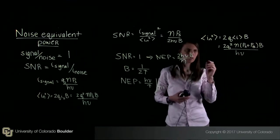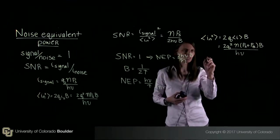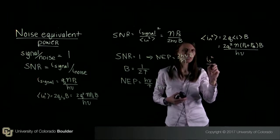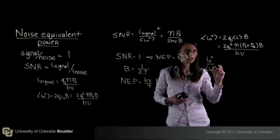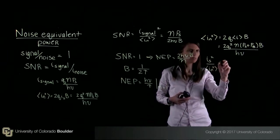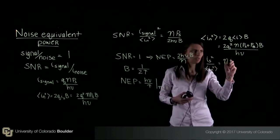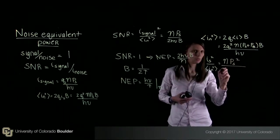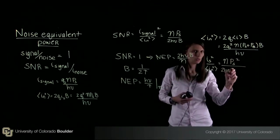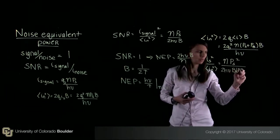So now I can write down my signal to noise ratio, IS squared over IN squared. And here what I end up with is eta P s squared over 2 H nu bandwidth and then P s plus P b.